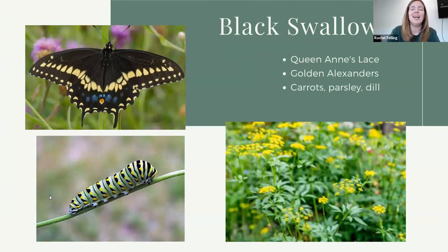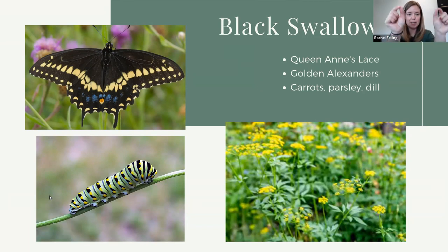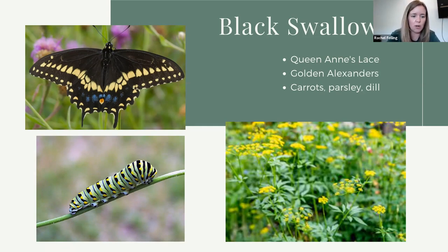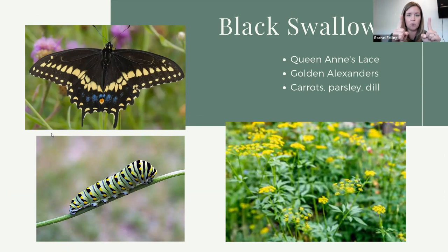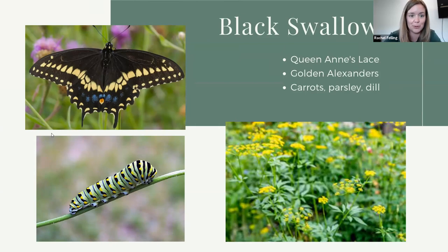The black swallowtail. Swallowtails can get a little confusing — they all have the name swallowtail because of those little tails on the bottom parts of their wings. The black swallowtail is mostly black but with a yellow stripe. The swallowtails are, with the exception of one we'll talk about in a minute, a larger butterfly — your three- to four-inch-across butterflies. The black swallowtail's caterpillar is often confused with the monarch's — similar size, shape, and pattern, but different colors: the monarch caterpillar is black, yellow, and white; this guy is green, black, and yellow.